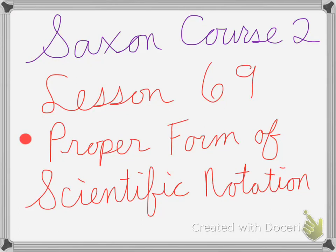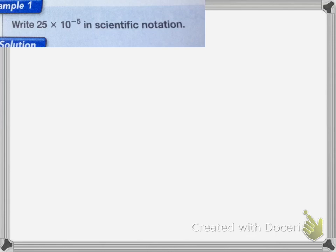This Haxon Course 2 Lesson 69 is on proper form of scientific notation. When we write with scientific notation, we usually put the decimal to the right of the first non-zero digit.